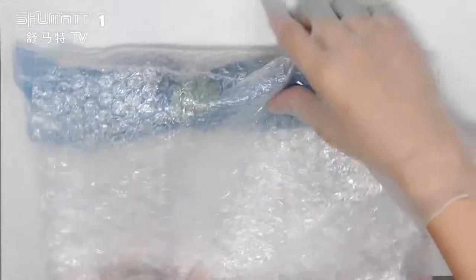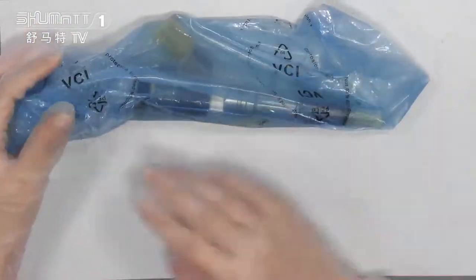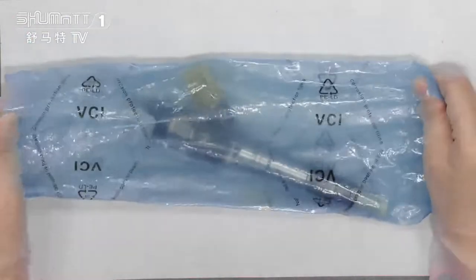Inside, we have two layers. The first layer, the second layer, VCI anti-rust bag.